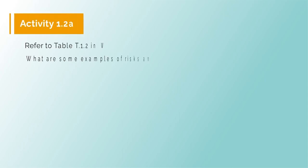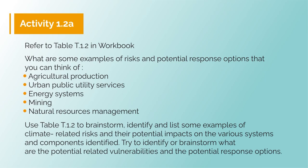What are some examples of risks and potential response options that you can think of in agricultural food production such as crop farming, fishing and animal rearing; urban policy utility services; energy systems; mining and natural resource management; and urban public utility services? Use table T1.2 to brainstorm and list some examples of climate-related risks and their potential impacts on the various systems and components identified. Try to identify the potential related vulnerabilities and the potential response options.